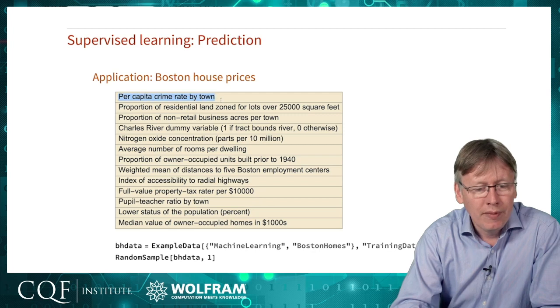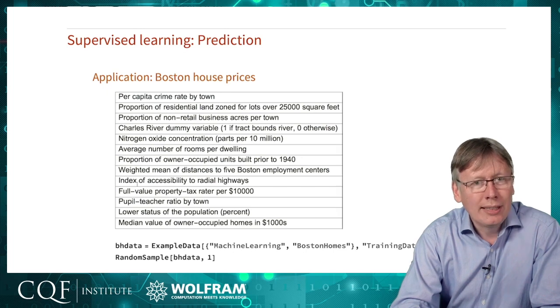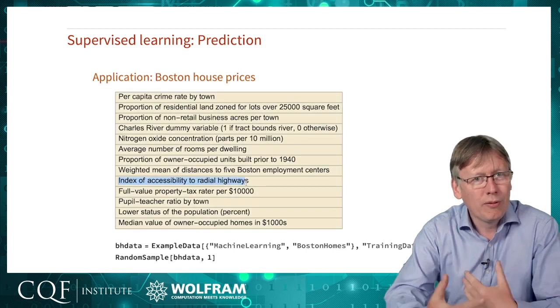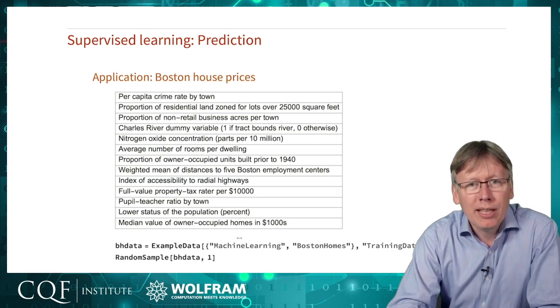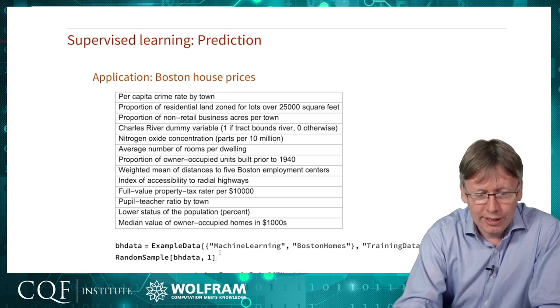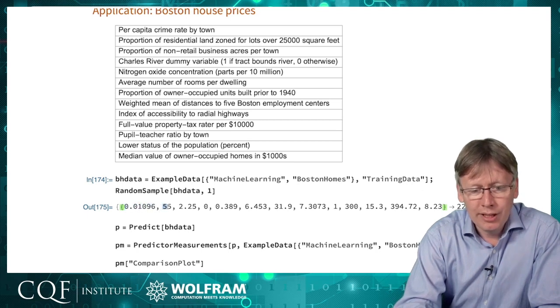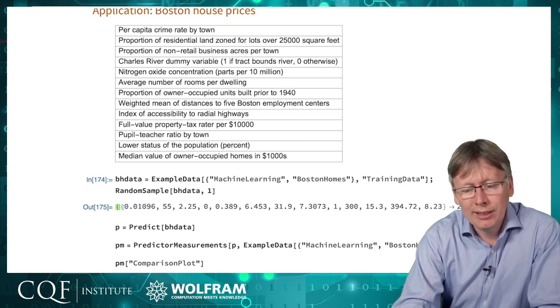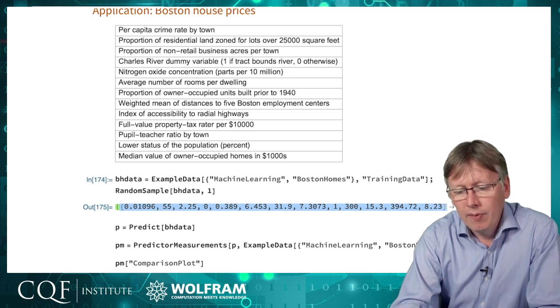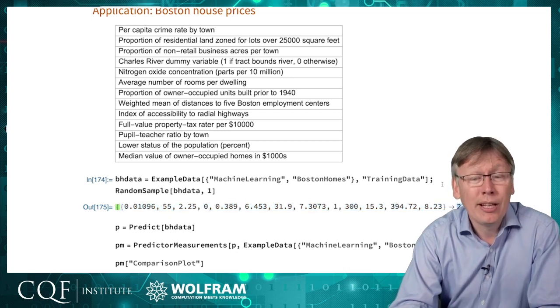There's the crime rates in the area or things like how accessible the roads are. A whole bunch of things to do with the part of town that you're in that might affect house prices. Let's have a look at a sample of that data. Here are the numbers. There's a number associated with each of these inputs that affect our prices and then a value in thousands of dollars. This flat was a $22,000 flat.